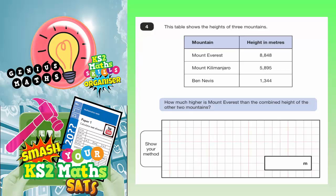Question four. This table shows the heights of three mountains. We've got Mount Everest, Mount Kilimanjaro and Ben Nevis. And the question is, how much higher is Mount Everest than the combined height of the other two mountains?